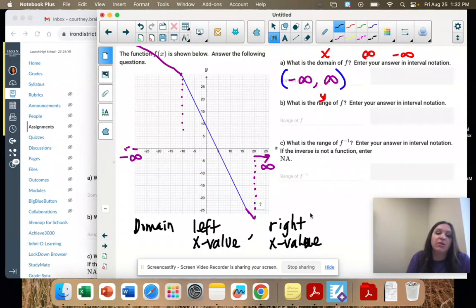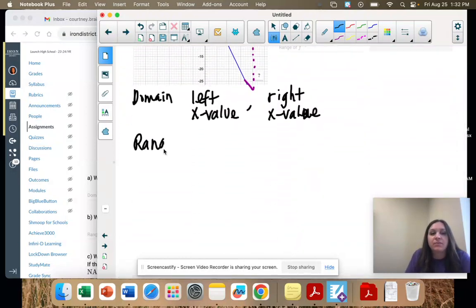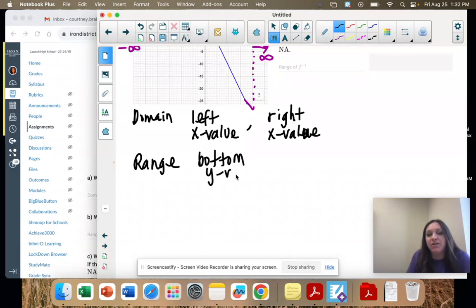Okay, let's do the same thing with the range. So the range, you look at the bottom, that's your negative y value, comma, now look at your top y value.